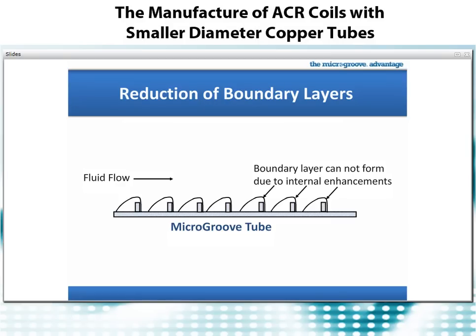Micro-groove tubes have internal enhancements and grooves that reduce the formation of boundary layers. You can see that the boundary layer begins to develop but breaks down as it moves over the grooves. The additional mixing of the refrigerant inside the tube increases the amount of refrigerant that comes in contact with the tube wall. The positive effect on heat transfer from these internal enhancements has been known for a long time and applied commercially for over 20 years. When combined with smaller diameter tubes, we have even more advantages.